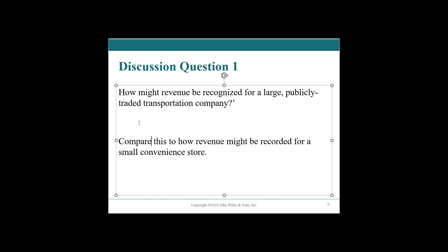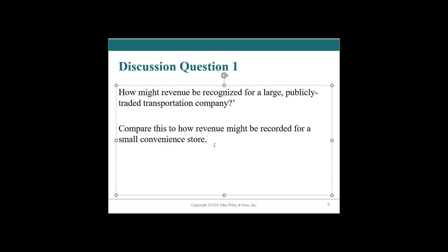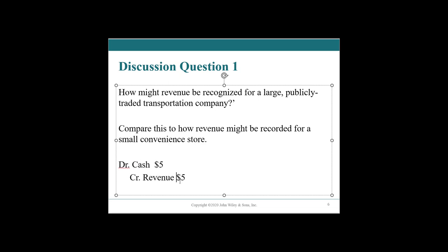For a small convenience store, it's a lot like the lemonade stand. A customer comes in, hands over $5 for some candy, and the store immediately credits revenue — $5. There's no delay in timing: the customer wants the product, pays the money, gets the product, and the convenience store recognizes the revenue from the sale right away. That's it for this video — see you in the next one.